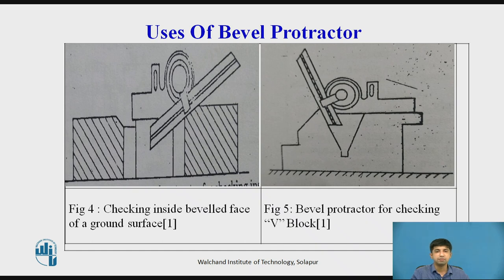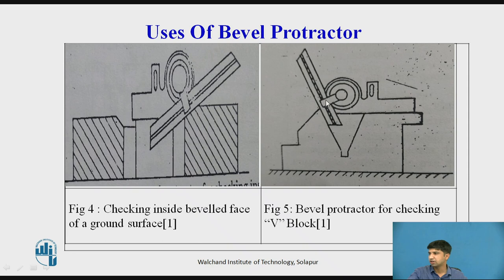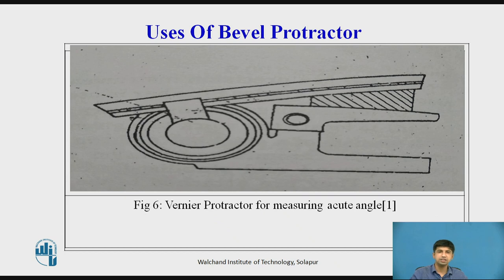Uses of the bevel protector: First, checking the inside beveled face of a ground surface — the blade is fixed against the base stock to measure the angle. Second, using the bevel protector for checking a V-block — the blade is placed against the base plate stock to measure the angle. Third, using the acute angle attachment — the attachment is fixed with the blade, the work is placed against it, and the reading is taken.